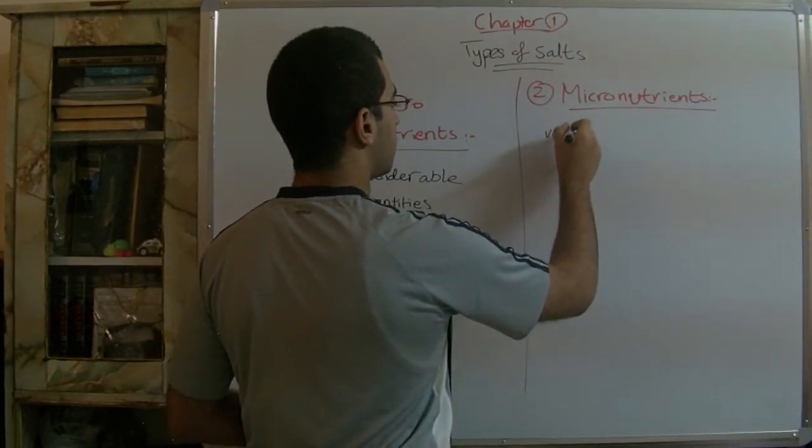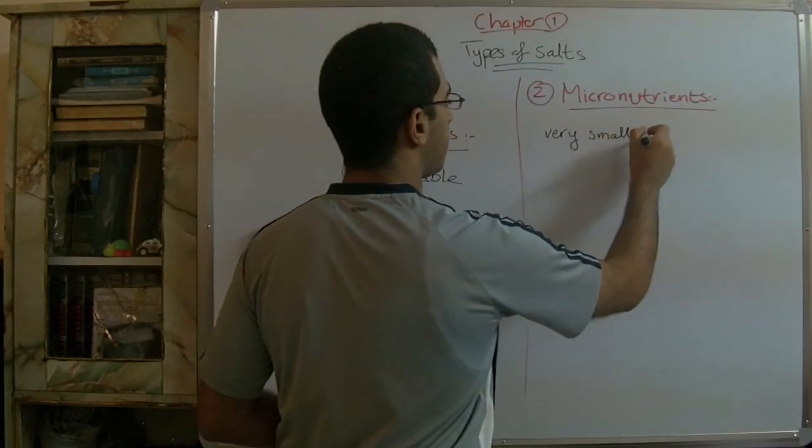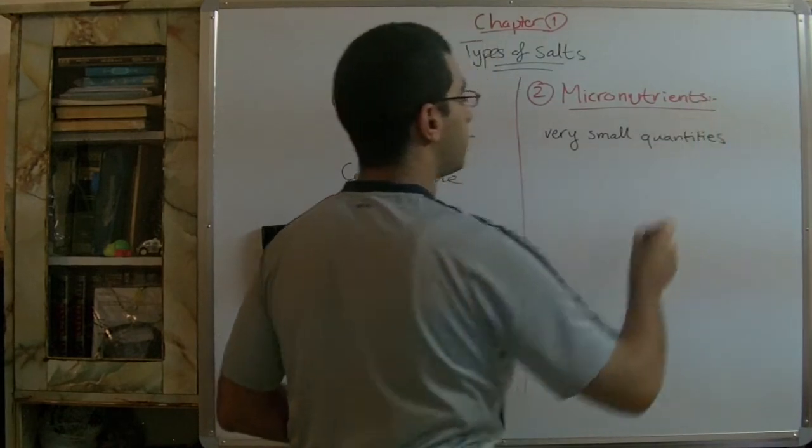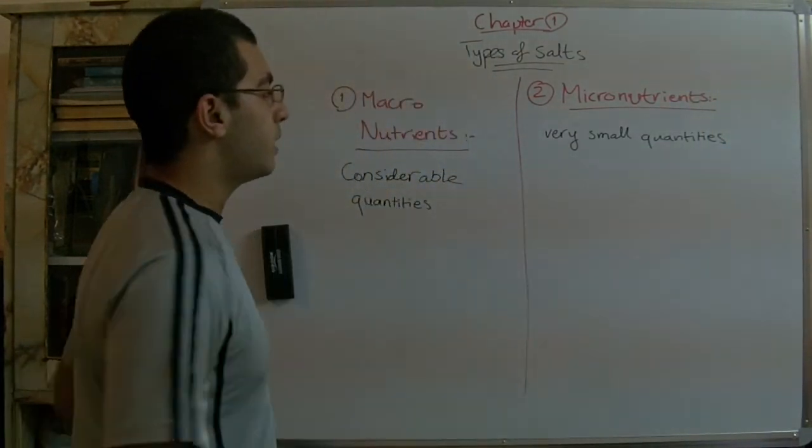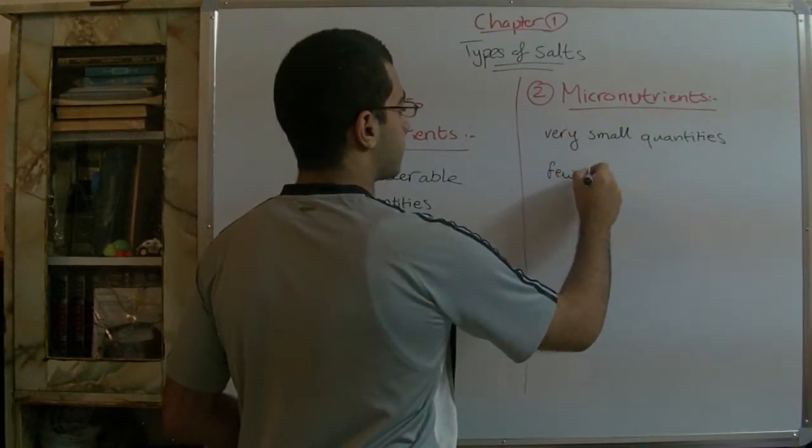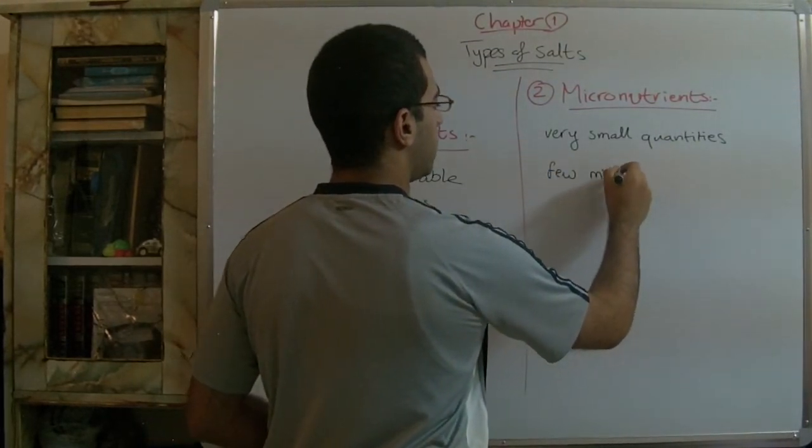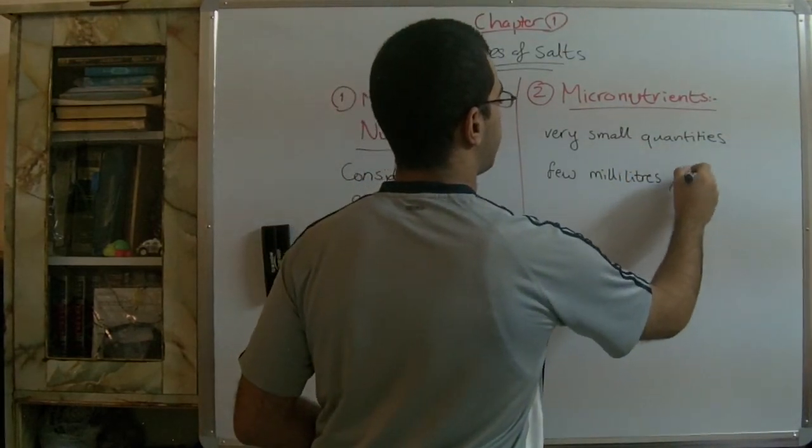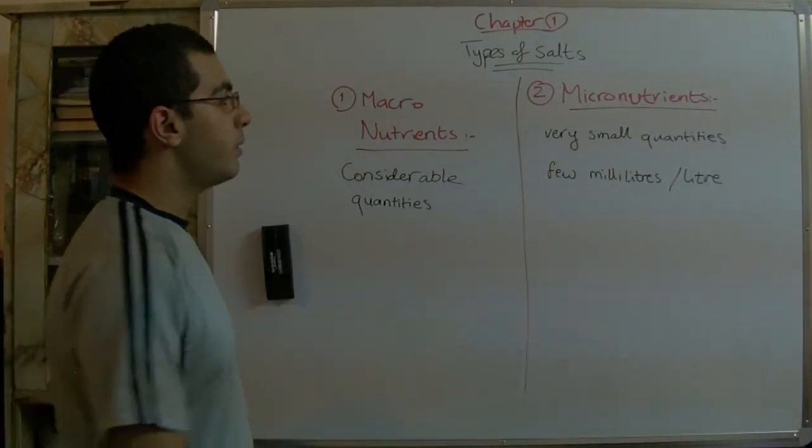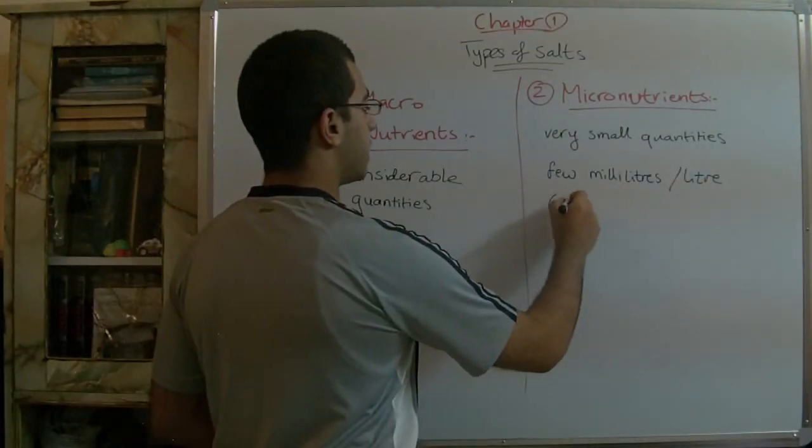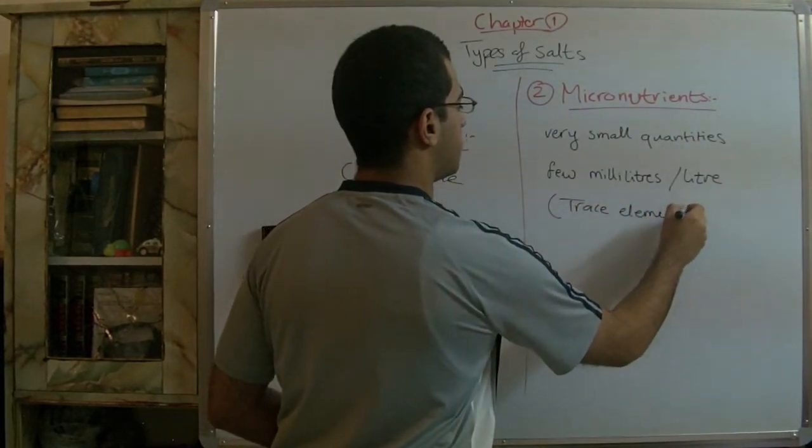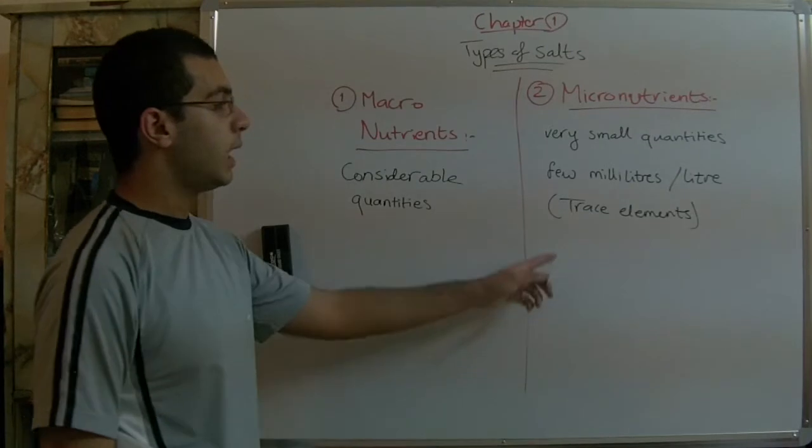While the micronutrients are used by the plant in very small quantities that may not exceed a few milligrams or milliliters per liter. They are called trace elements because they are needed by the plant in very rare quantities.